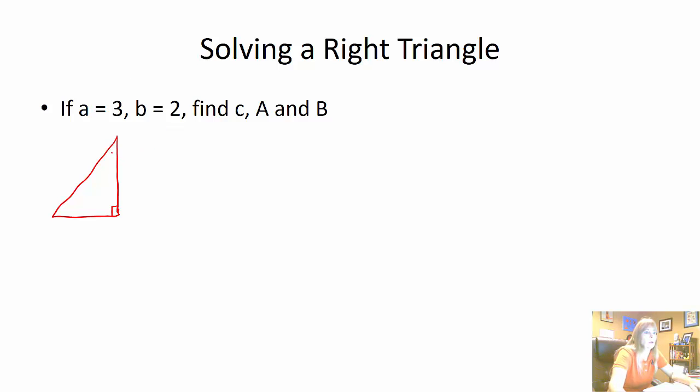I'm going to call this angle A, this angle B, and my 90 C. So it wants me to find little c. It tells me A, little a, my leg is 3. And then it tells me little b is 2. So I want to find the hypotenuse and then my other two angles.